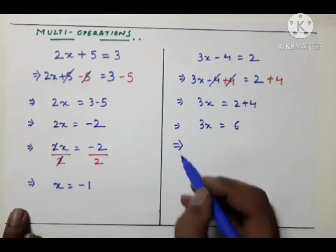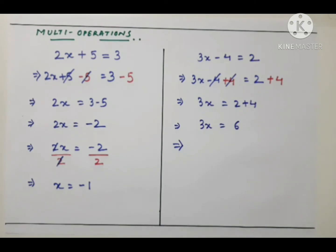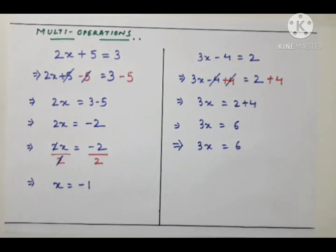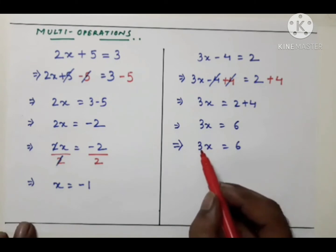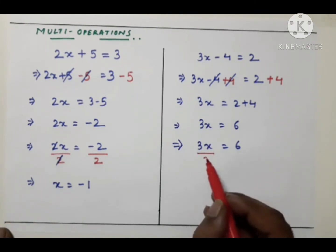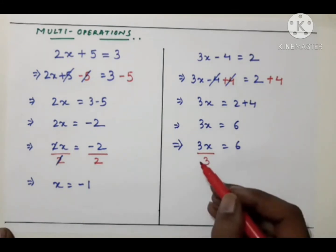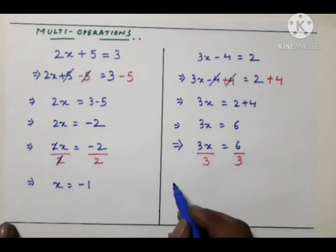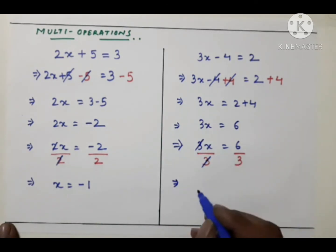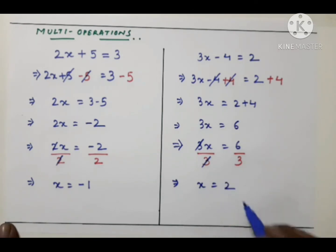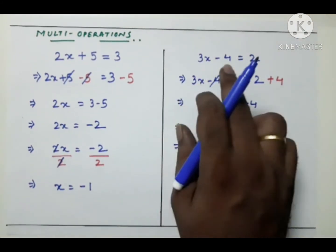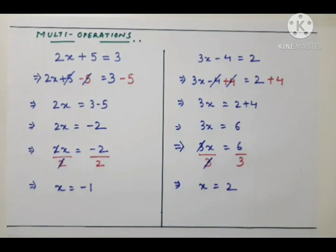Now we have 3x = 6. To remove 3, since it is multiplied, we divide both sides by 3. The 3s cancel, giving x = 6/3 = 2. Verification: 3 × 2 = 6, and 6 − 4 = 2. The left hand side equals the right hand side, so our solution is verified.